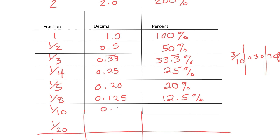1 tenth is 0.1, or 10%. 1 twentieth is half of 10%, so that's 0.05, or 5%. And then of course, 1 out of 100 is 0.01, or 1%.